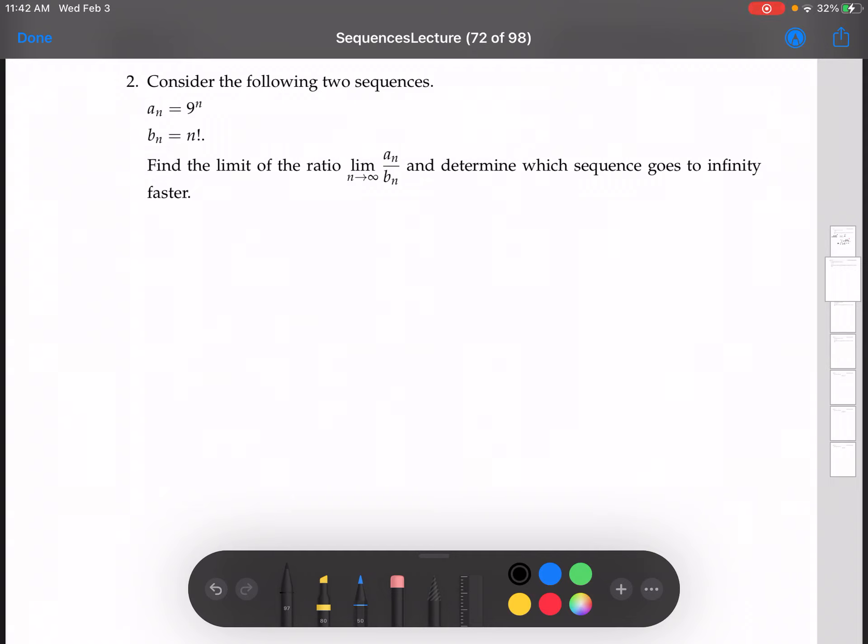All right, for this one, we have a_n is 9 to the n. This is an exponential. And b_n is n factorial. That's a factorial.